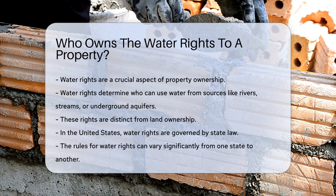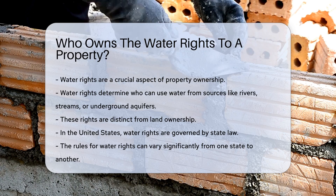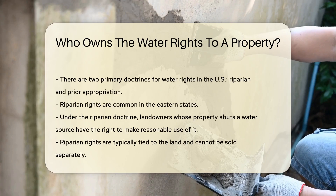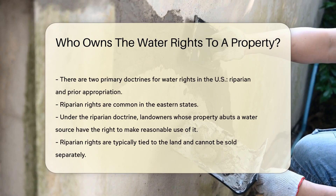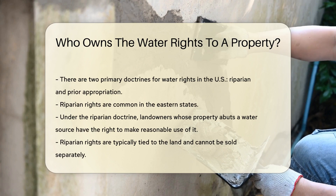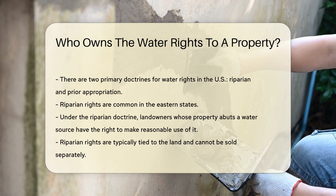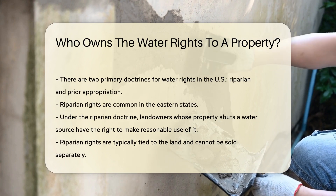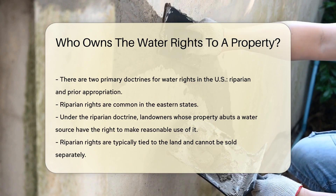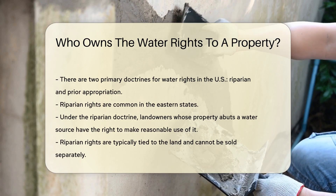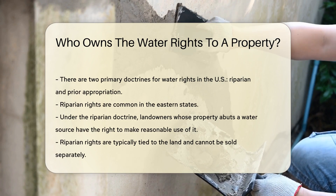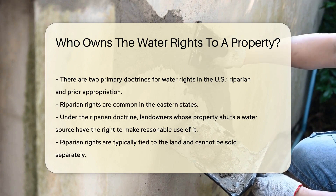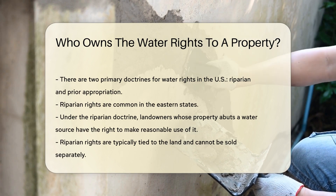There are two primary doctrines for water rights in the U.S.: riparian and prior appropriation. Riparian rights are common in the eastern states. Under this doctrine, landowners whose property abuts a water source have the right to make reasonable use of it.